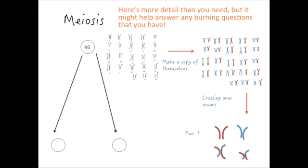Let's start by remembering that our initial cell has 46 chromosomes — 23 pairs of chromosomes, one from the father and one from the mother. Just like in mitosis, they make a copy of themselves. So you've got a copy here, here and here. You can quite simply see that the blue chromosome has made a copy of itself and so has the red one, so you've now got two from your father and two from your mother, which are identical.